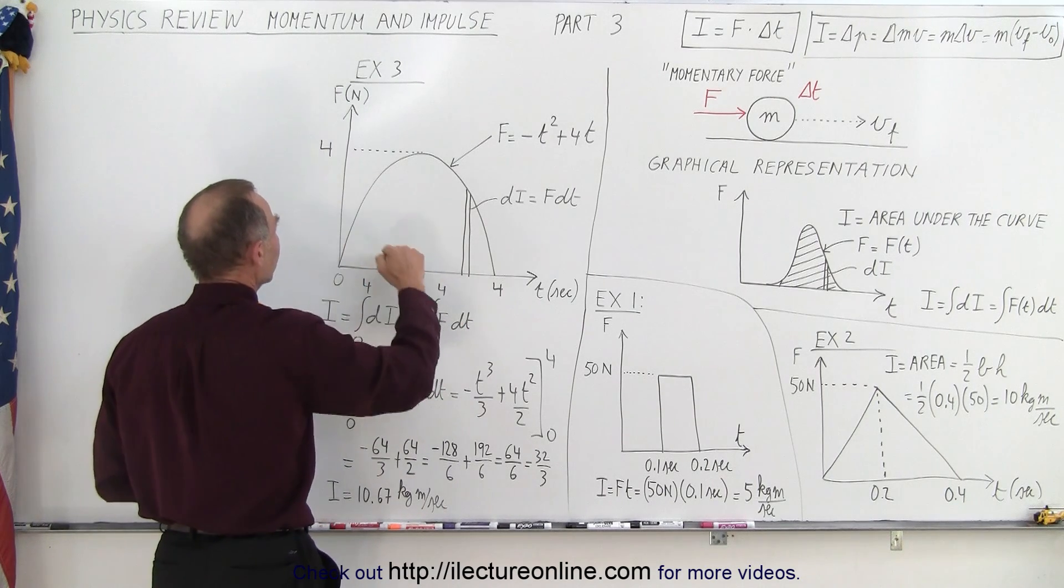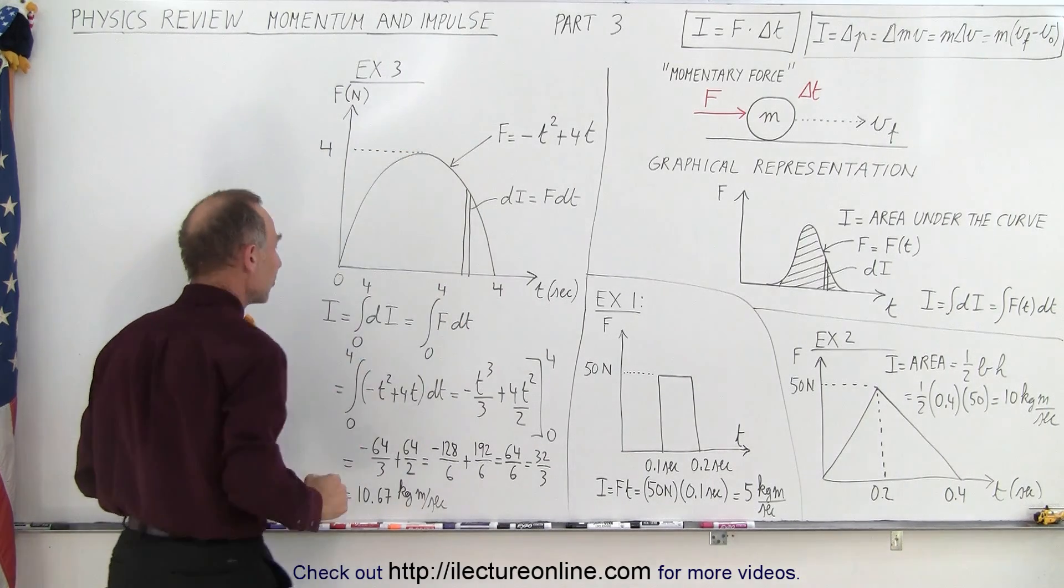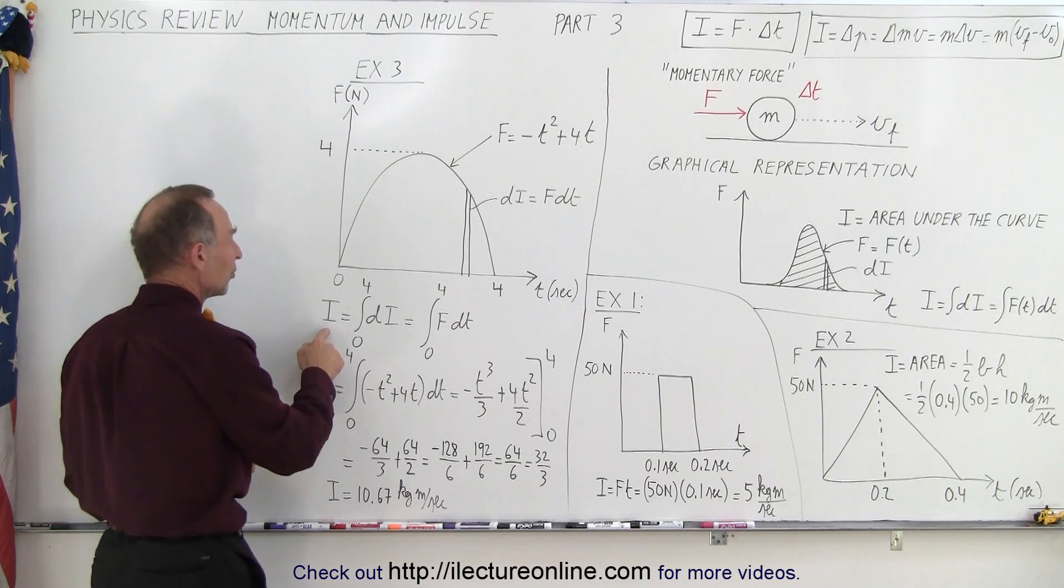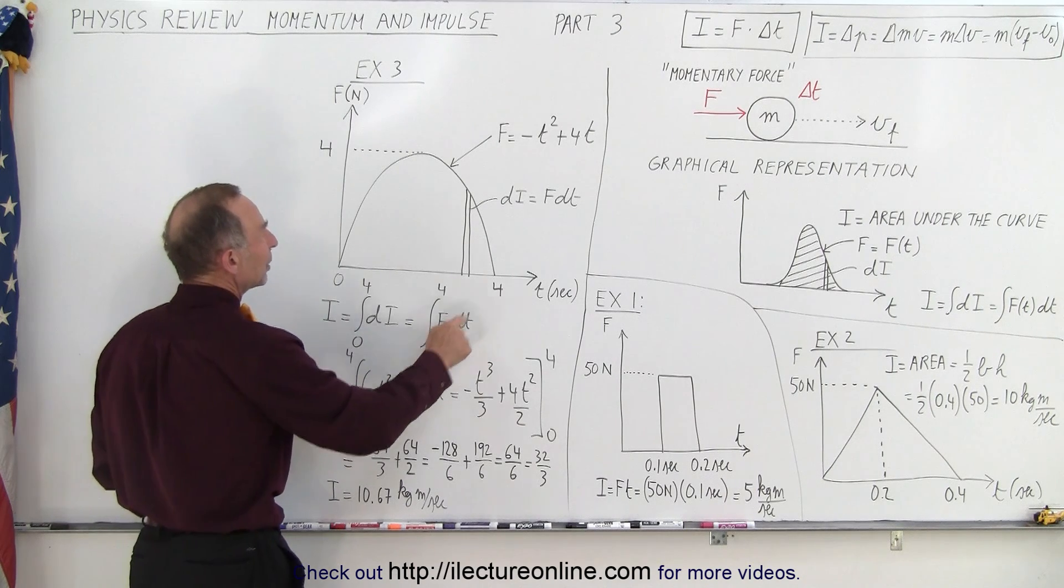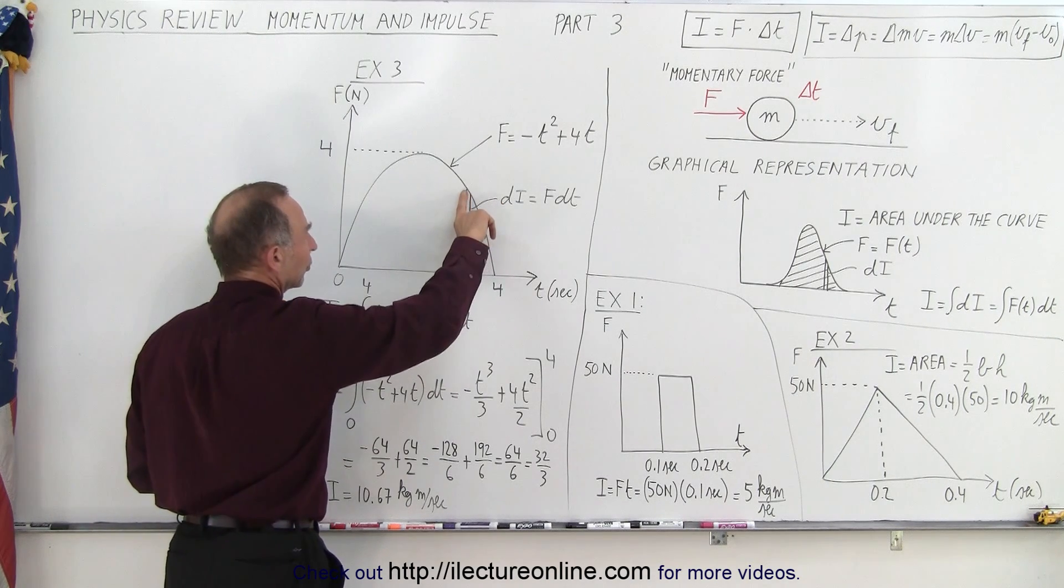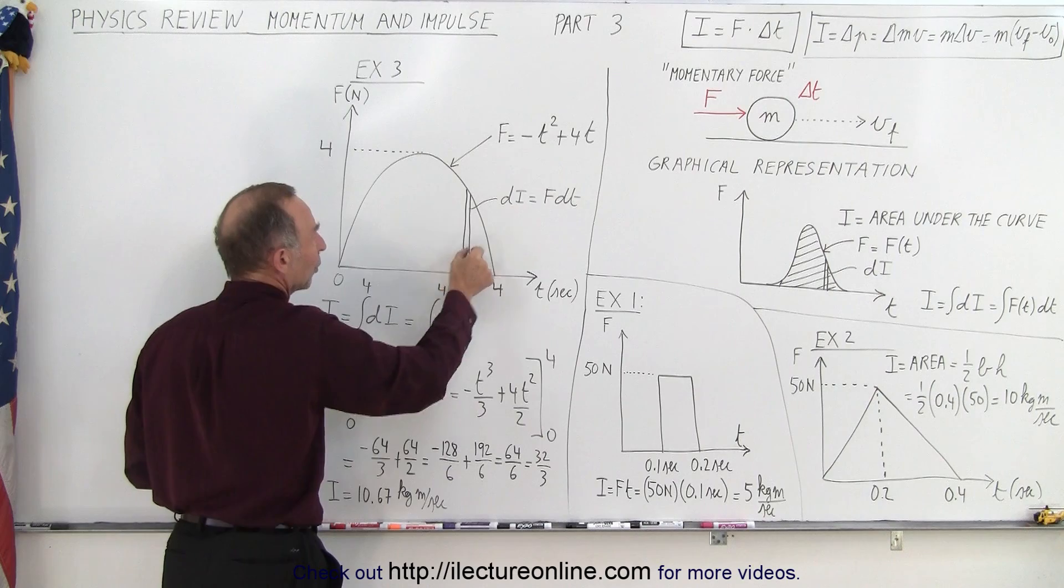So the impulse is the integral of Di going from time equals 0 to time equals 4, and Di can be defined as the force, the vertical distance, which is the force times the width, which is dt.